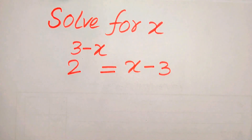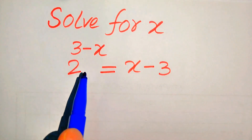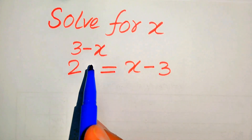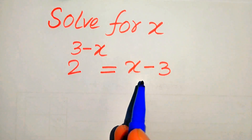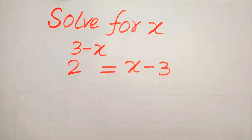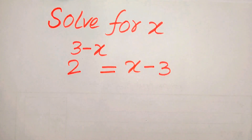Hello everyone. How to solve this problem for the values of x: 2 to the power of (3 minus x) equals x minus 3. We solve this problem for the values of x. I hope you like this method, but if you have any other method in mind, please don't hesitate to write it in the comment section.